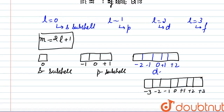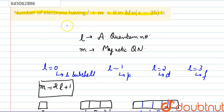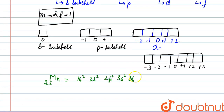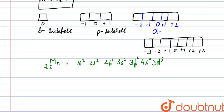Now we have to find those electrons which have the value of L plus M equal to zero in Mn. We write the electronic configuration for Mn with atomic number 25: 1s2, 2s2, 2p6, 3s2, 3p6, 4s2 and 3d5. This is the electronic configuration for Mn.